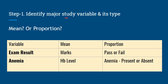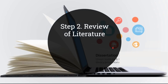Step one is identifying the major study variable and its type. For example, if the study variable is exam result, we need to decide whether we are going to measure the average or mean marks of the study population, or we are going to measure the mere pass or fail status. If the study interest is on anemia, we need to fix whether we are measuring hemoglobin level or checking the status of anemia present or not. After fixing the study variable and its type, we do a thorough review of literature to identify prevalence from a similar study.